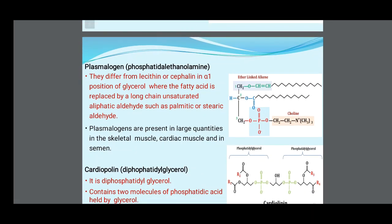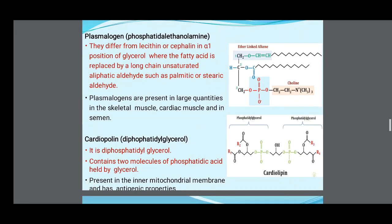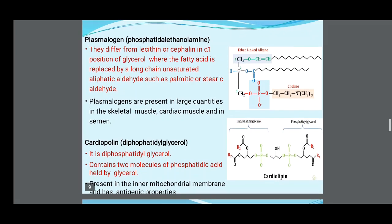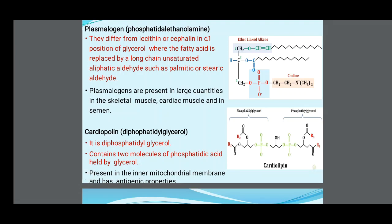Plasmalogen differs from lecithin or cephalin in that at the alpha-1 position of glycerol, the fatty acid is replaced by a long-chain unsaturated aliphatic aldehyde such as palmitic or stearic aldehyde. Plasmalogens are present in large quantities in skeletal muscle, cardiac muscle, and semen. Cardiolipin (diphosphatidylglycerol) contains two molecules of phosphatidic acid held by glycerol, is present in the inner mitochondrial membrane, and has antigenic properties.